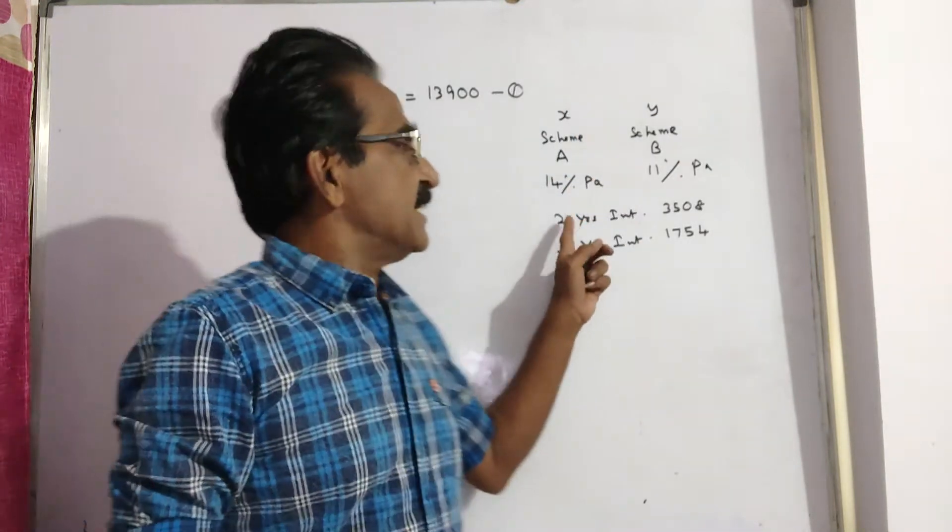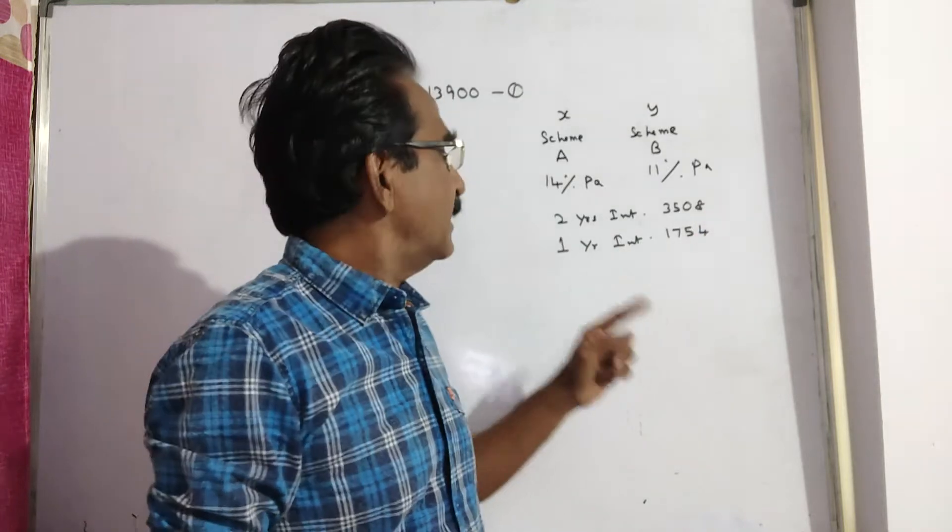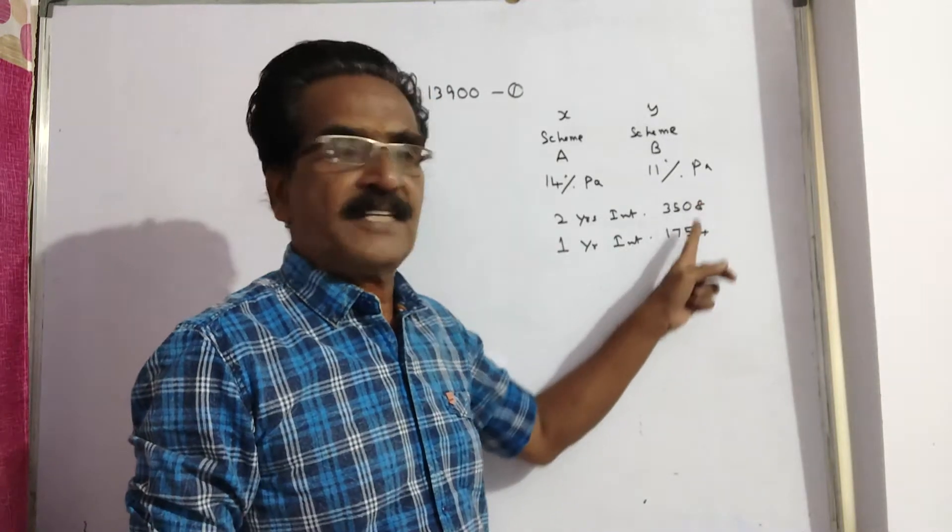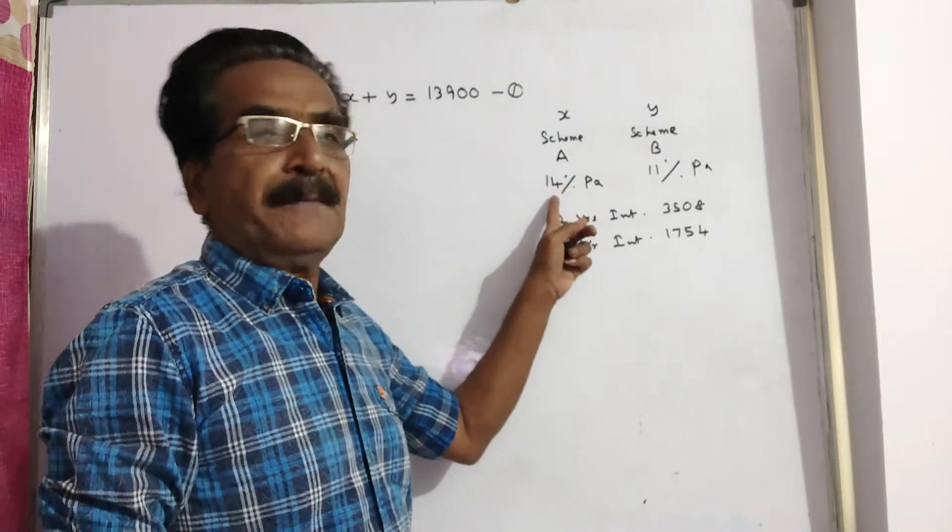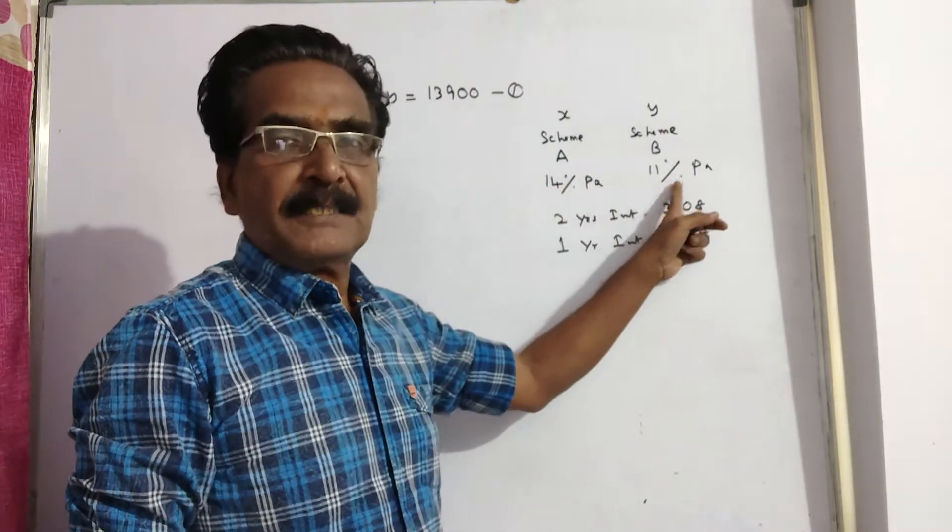Two years interest is 3,508. Then one year interest is half of this, that is 1,754. Now this is 14% per annum, 11% per annum.